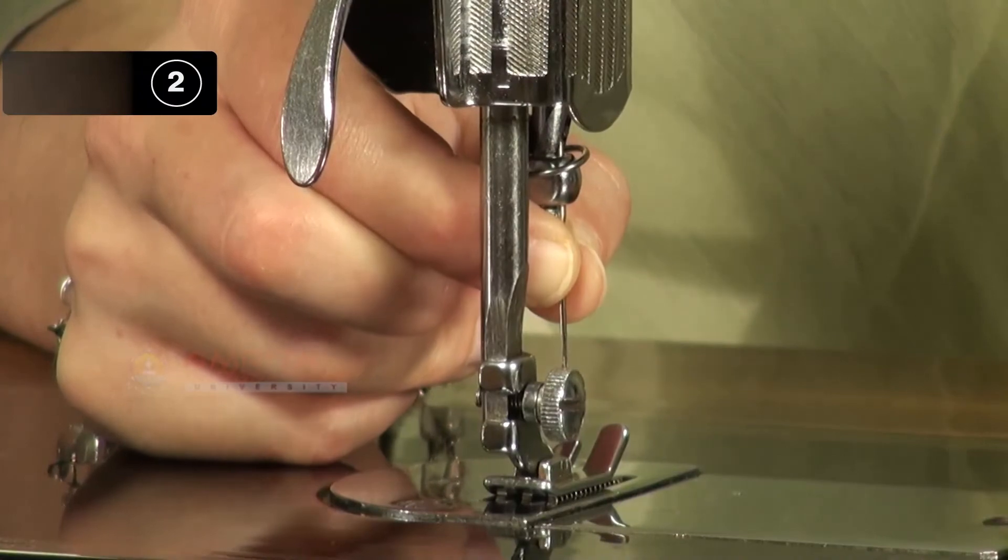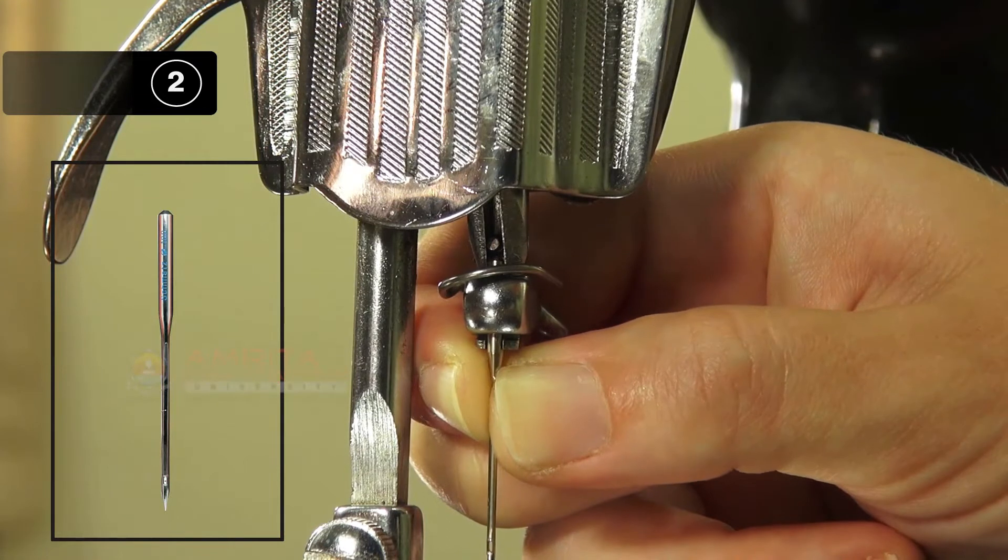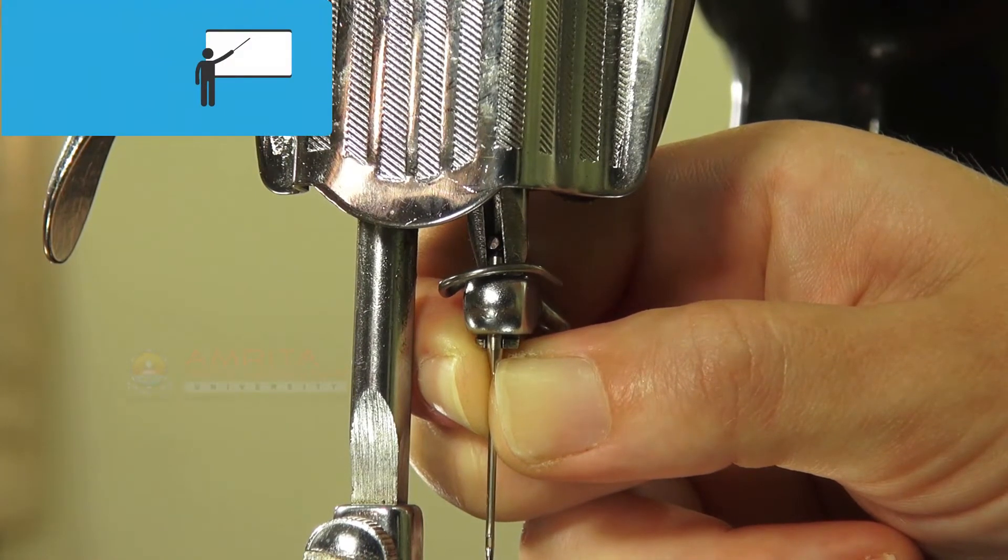Step 2: Insert the needle with the groove to the left and the scarf to the right. If the needle is inserted in the wrong way, the needle will either break or will prevent you from sewing properly.